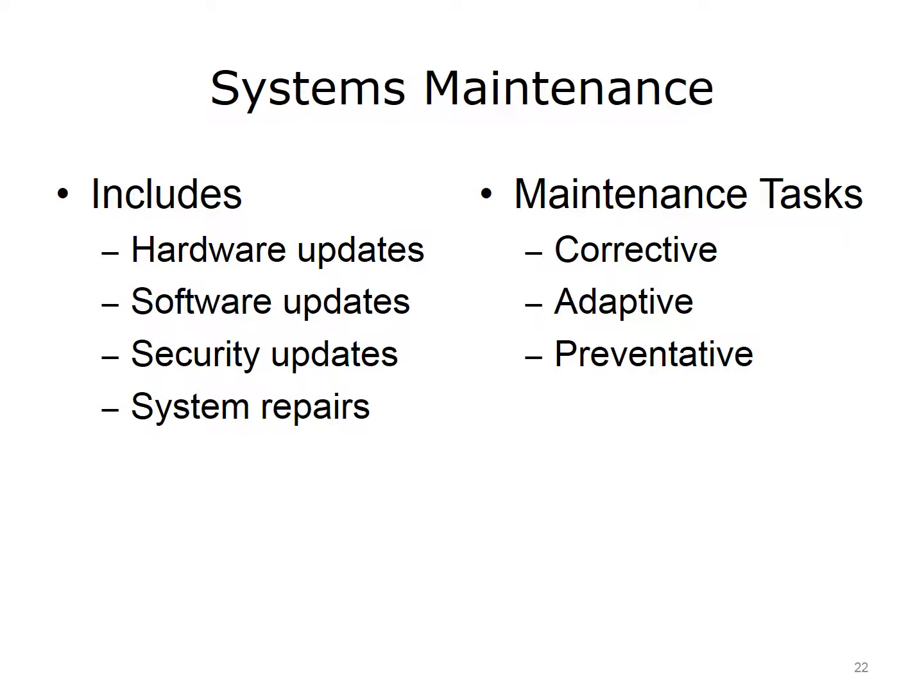Systems maintenance includes various forms of changes and updates required to keep a computer system running properly. Maintenance includes repairing, replacing or moving physical hardware, updating existing software and installing new software and security updates. Maintenance is performed on a regular or semi-regular schedule, often during non-peak usage hours. Occasionally, a system may need unscheduled emergency maintenance, usually when there is a hardware or software failure that needs immediate attention. Emergency updates may also be required for recently released security updates. Maintenance tasks can be classified as corrective, adaptive, and preventative.